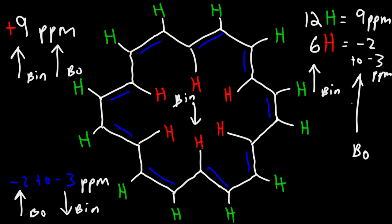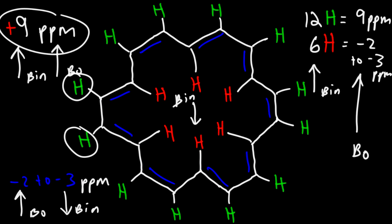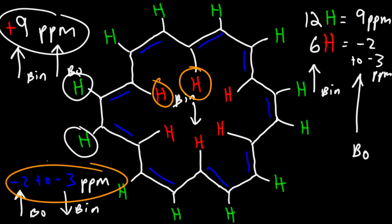So that's what you want to keep in mind. When you have these structures, the protons on the outside — like the protons on the outside of the benzene ring — will have a high chemical shift. The protons on the inside will have a very low chemical shift due to the different directions of the induced magnetic field around the molecule.